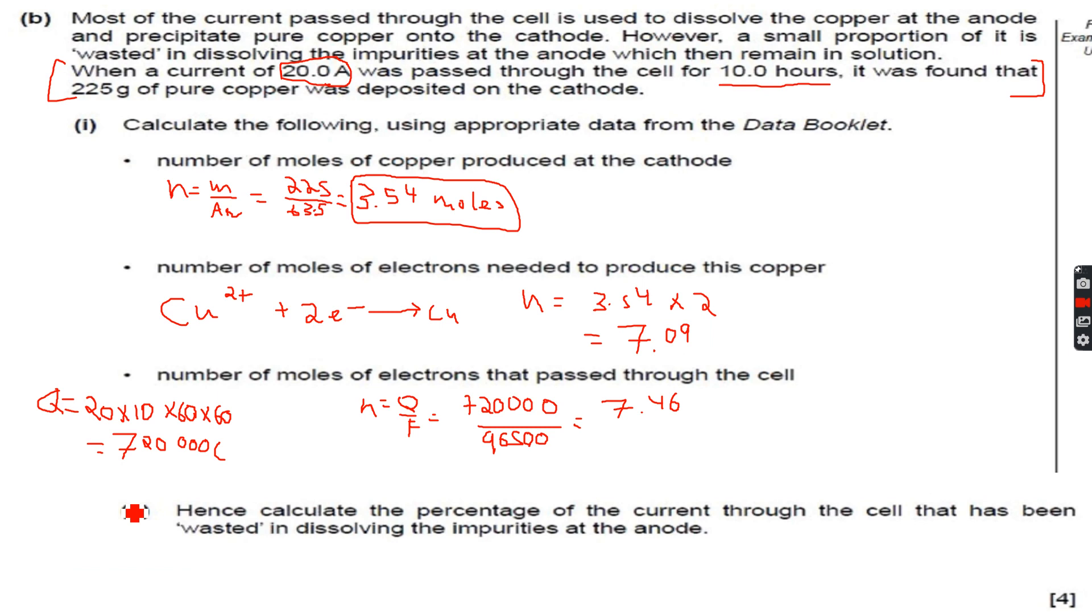Hence calculate the percentage of the current through the cell that has been wasted in dissolving the impurities at the anode. So the amount is 7.46 minus 7.09. This is the amount that has not been producing copper and hence has been wasted over the total amount that was passed, which was 7.46.